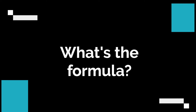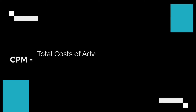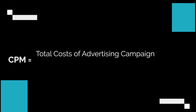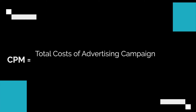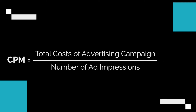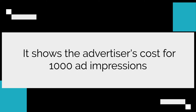So what's the formula? CPM is equal to total costs of an advertising campaign divided by the number of ad impressions and multiplied by a thousand. Advertisers usually use CPM because it shows the advertiser's cost for one thousand impressions.